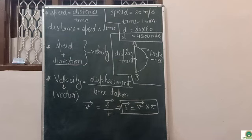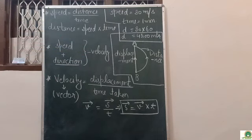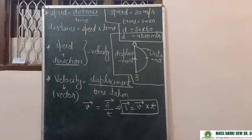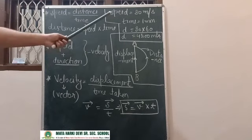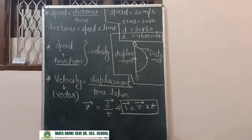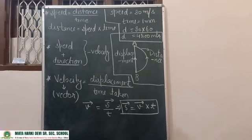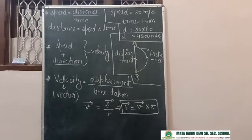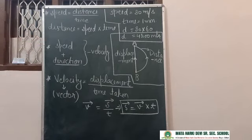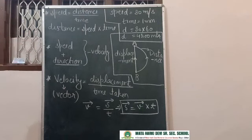4800 metres is the distance travelled by the car. But in which direction? If I ask you the direction of the car, can you tell me? No — because I haven't told you the direction with the speed. The car could go north, east, or south. Since the formula uses distance, which is a scalar quantity, speed is also a scalar quantity.